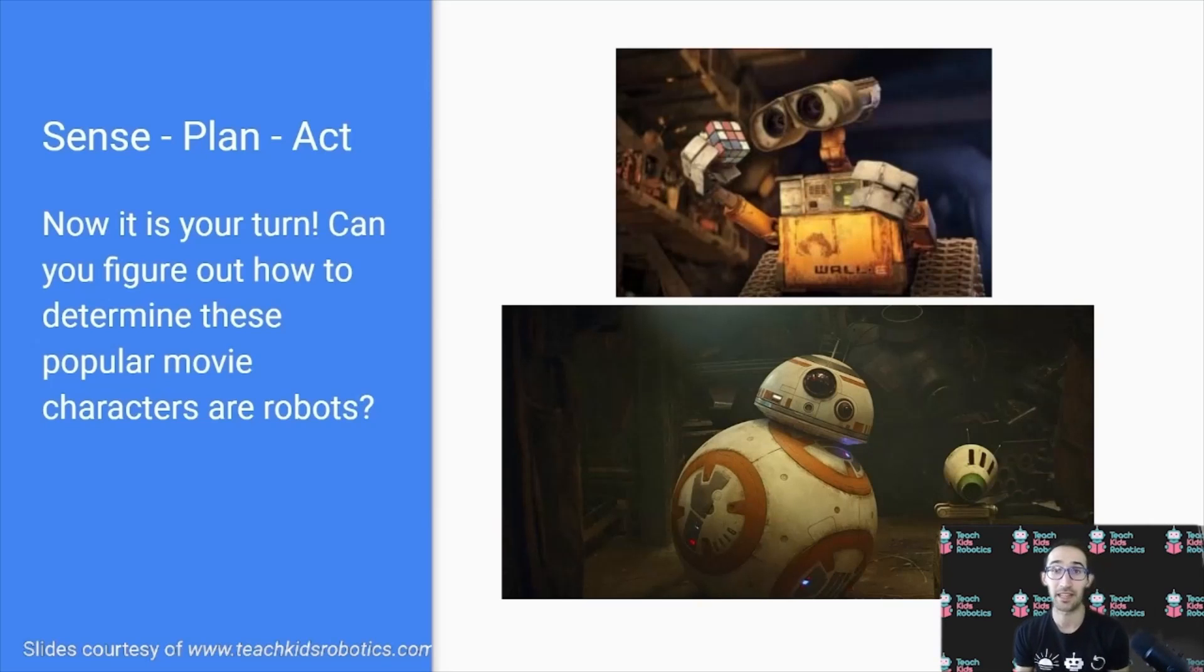We can see they have sensors, such as the binocular-like lenses at the top of WALL-E, or the various eye-looking lenses on BB-8.